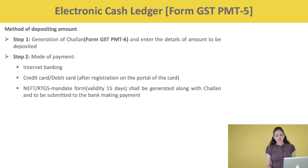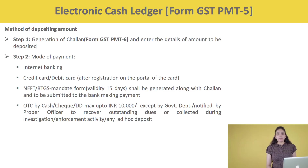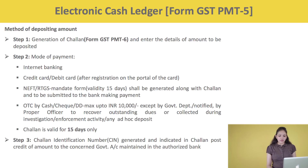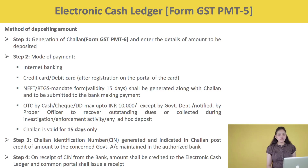Third mode is NEFT or RTGS — a mandate form valid for 15 days shall be generated along with the Chalan. Fourth is payment over-the-counter by cash, cheque, or DD, maximum up to Rs. 10,000, except by a government department or notified by the proper officer to recover outstanding dues or collection during investigation, enforcement activity, or any ad hoc deposit. The Chalan generated shall be valid for a period of 15 days. Step 3: A Chalan Identification Number (CIN) would be generated and indicated in the Chalan, post the credit of amount to the concerned government account in the authorized bank. Step 4: On receipt of the CIN from the bank, the amount shall be credited to the Electronic Cash Ledger and the common portal shall issue a receipt.